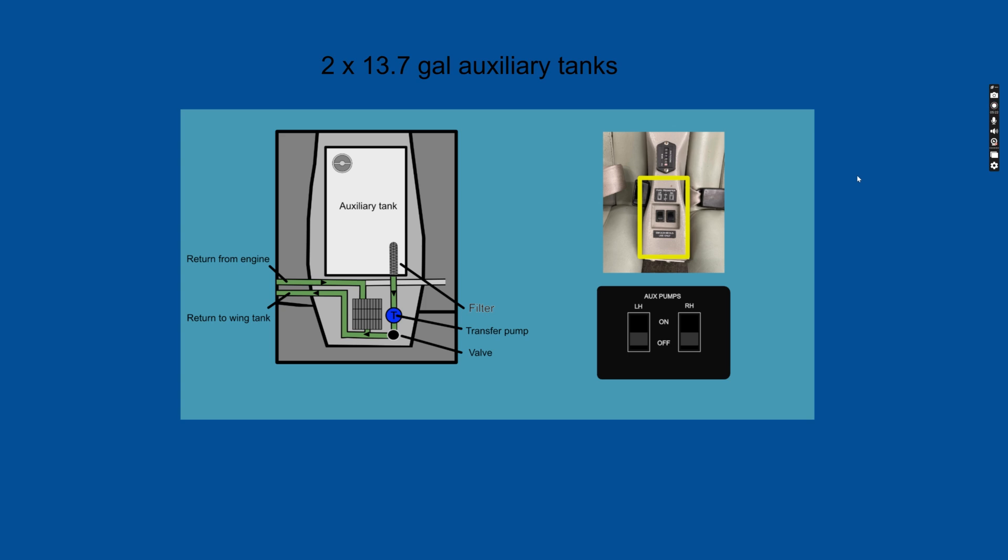The fuel from the aux tanks is pulled from there by an electric pump that is operated with these two switches here on the center console. They're just on-off switches. When you turn that switch on, you turn this electric pump on, and you open this valve here to allow fuel to be pulled from the aux tank. From there, it goes into the wing tank on that side.